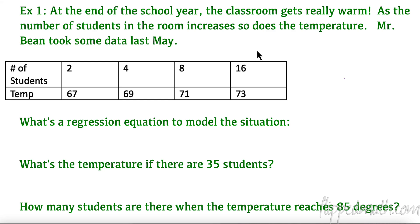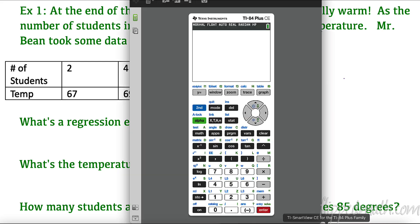Let's look at this first example. At the end of the school year, the classroom gets really warm. As the number of students in the room increases, so does the temperature. Mr. Bean took some data from last May. One of the things we need to remember is: is this logarithmic? This data is pretty obvious that this is proportionately going up by two, we're multiplying by two. This is more of a constant rate. When the dependent is going up at a more consistent rate and the independent is going up quicker proportionately, it's pretty easy to guess that it's going to be logarithmic.